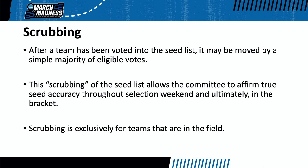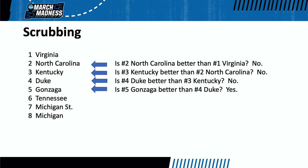So let's examine how the scrubbing process works. The committee takes the seed list in its most recent state and starts by comparing its overall number one seed to the team occupying the second line. In this example, Virginia would be compared with North Carolina. The committee will look at various factors, such as head-to-head results, results versus common opponents, the quality of the team's wins and losses, and various metrics. If a committee member is so inclined, they would make a motion which would require a second. Oftentimes, there isn't a motion.